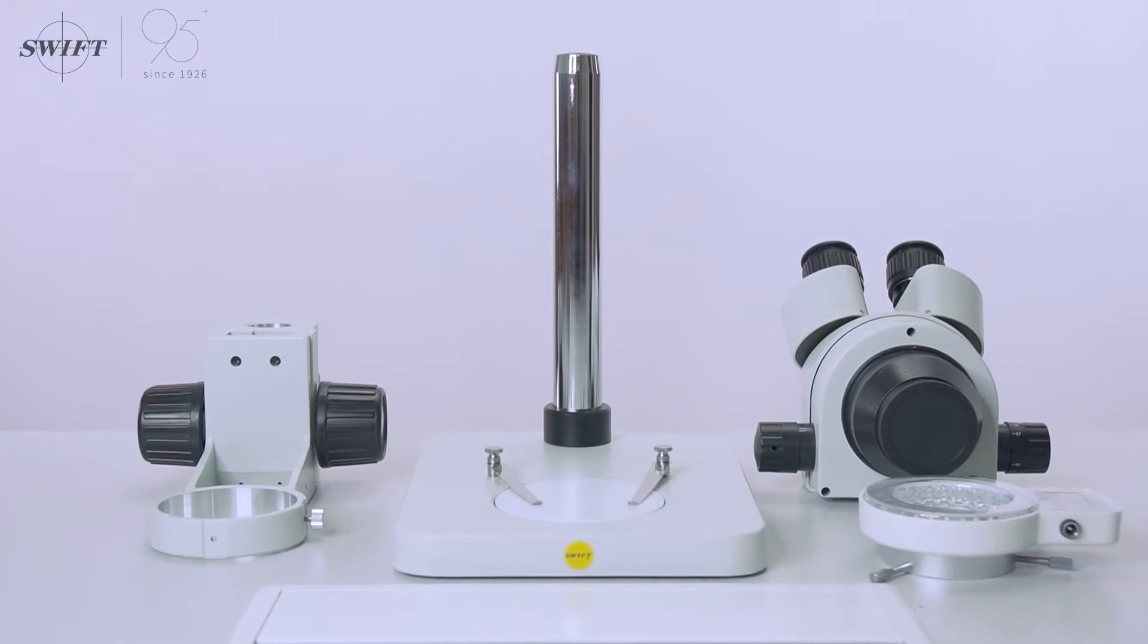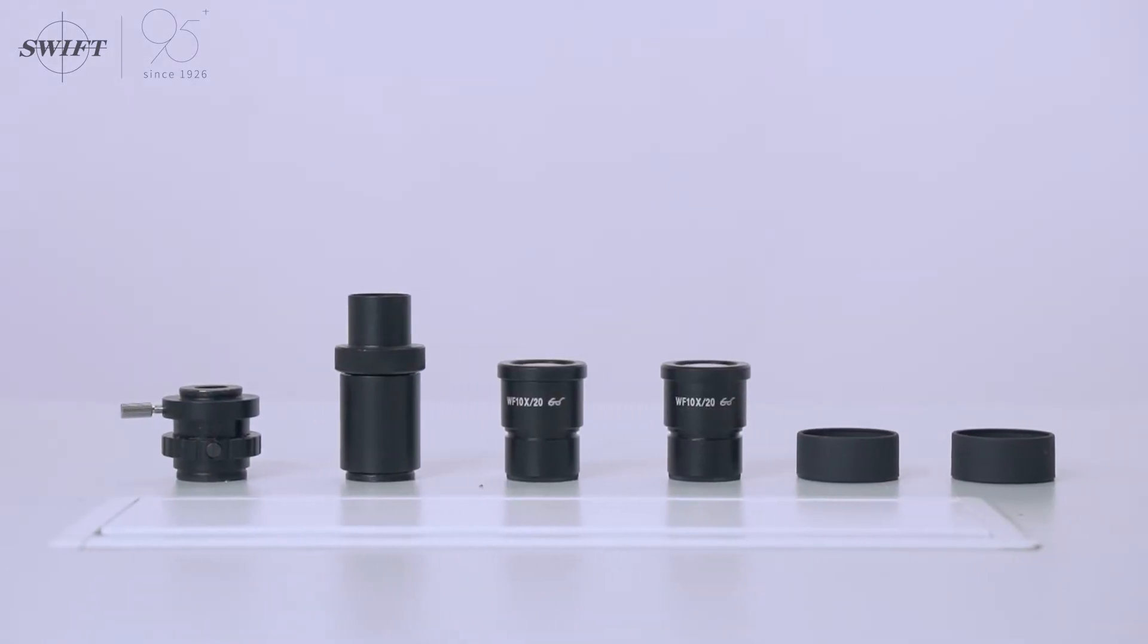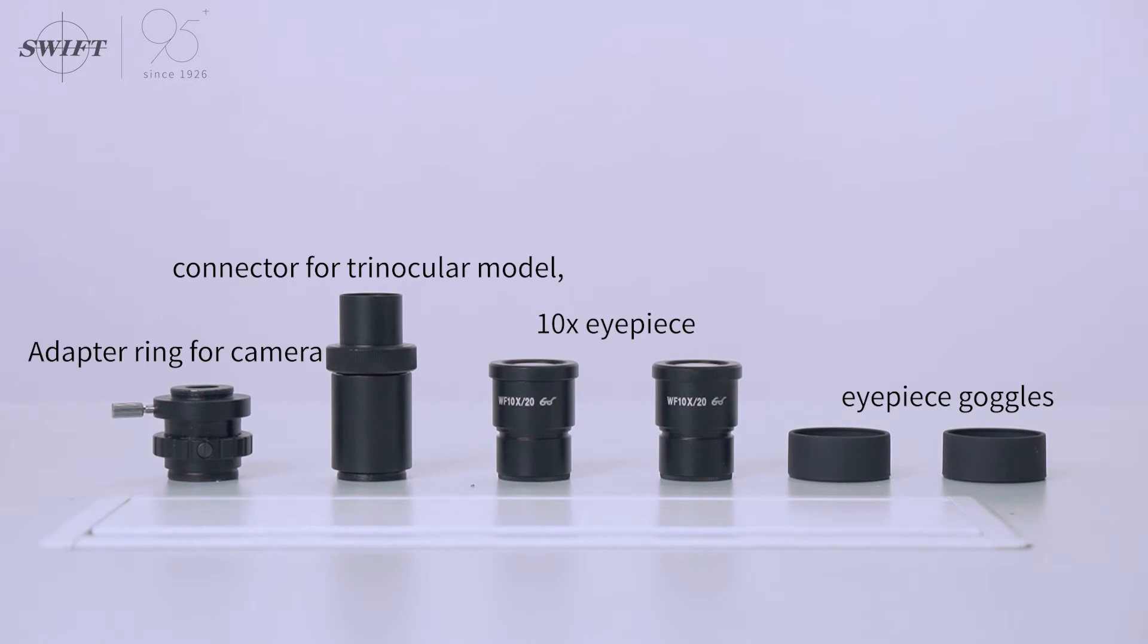The components mainly include focusing mechanism or lifting mechanism, host column and base, mirror body, host, LED ring light, adapter ring for camera, connector for trinocular model, 10X eyepiece, and eyepiece goggles.